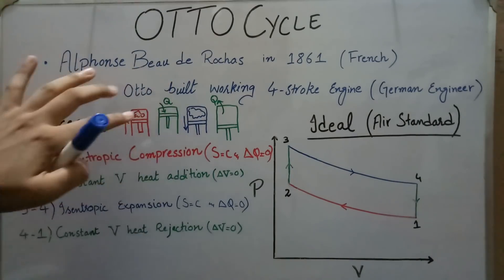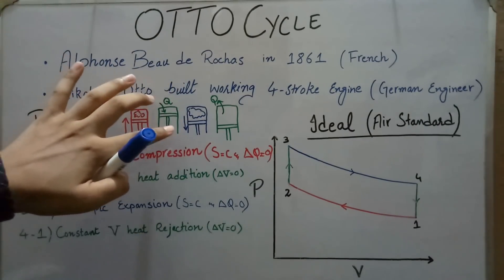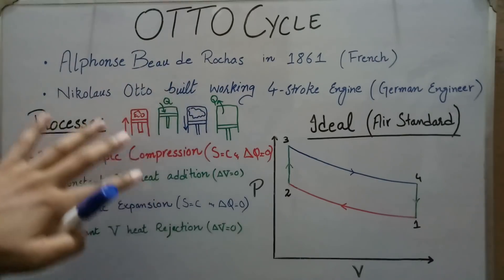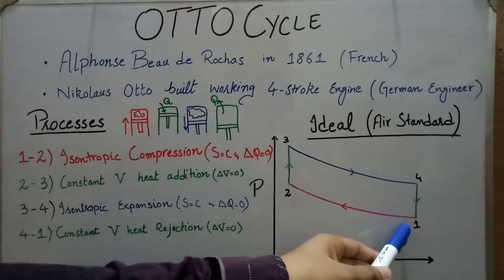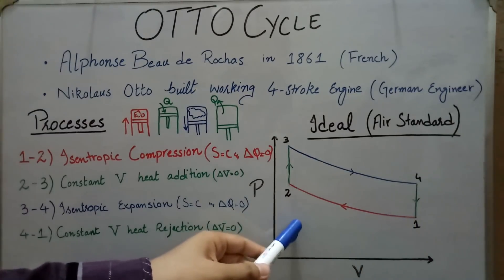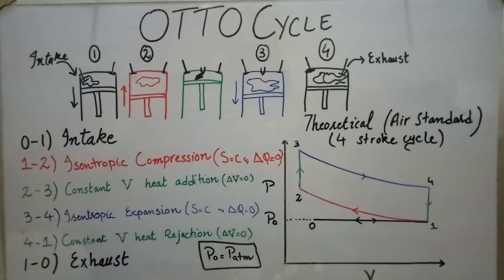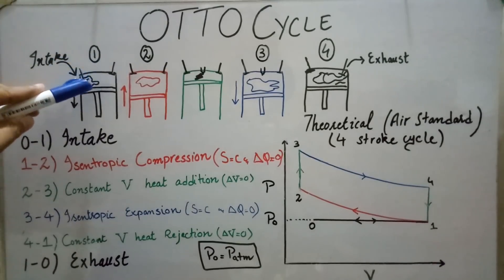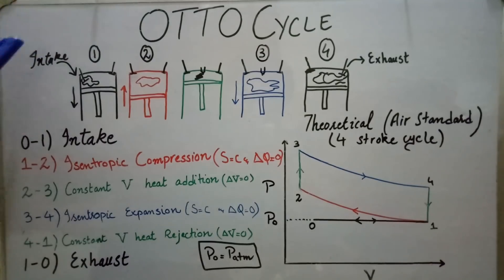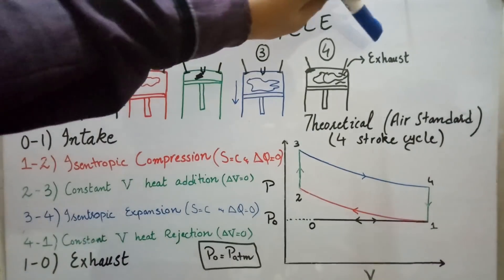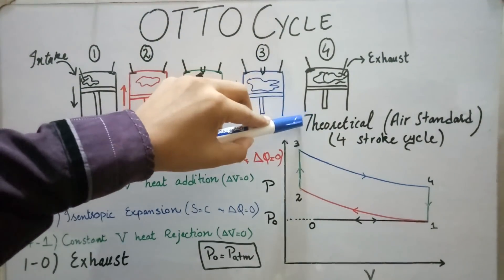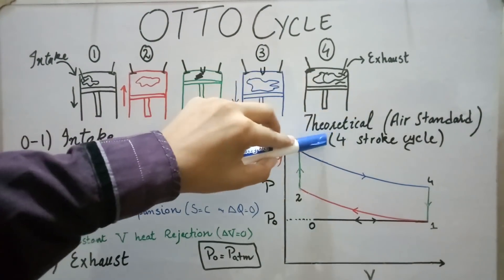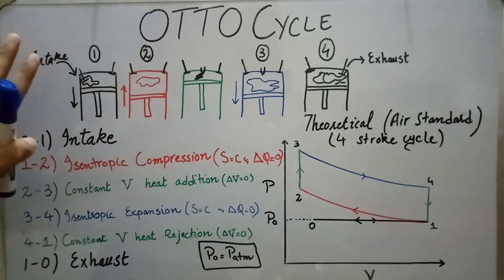However, in the ideal cycle the working fluid, once combusted, cannot be reused. That's why there must be some intake and rejection of the working fluid. Since we cannot reuse a finite amount of working fluid, there must be an intake as well as an exhaust in the theoretical cycle.